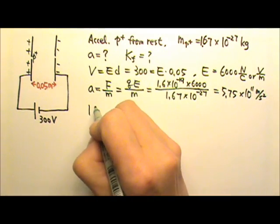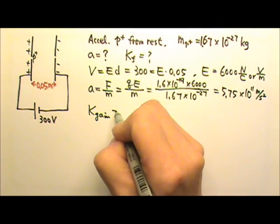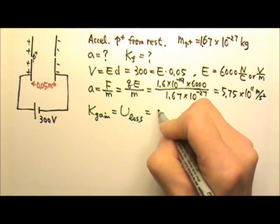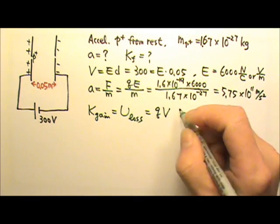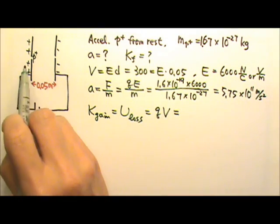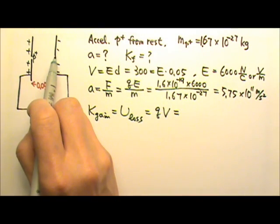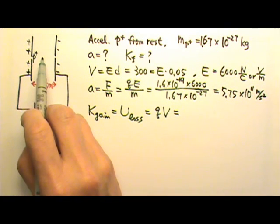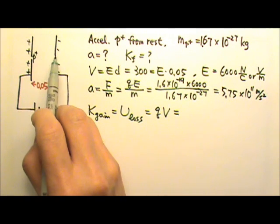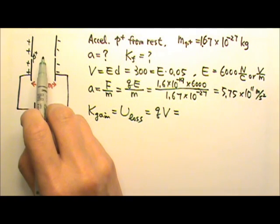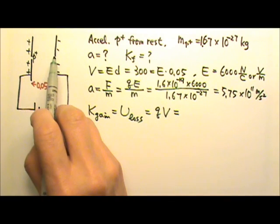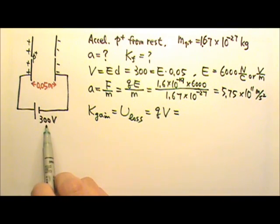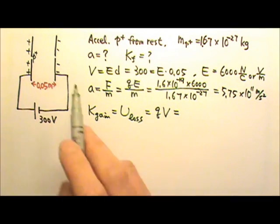If we are using a voltage to accelerate the charge, we can use the kinetic energy gain comes from the potential energy loss. And U equals to QV. If we are starting here, ending there, that means we are taking advantage of the entire 300 volts. If the charge starts from in the middle, right here, and then accelerates to the other end, that means it will only take advantage of 150, half of the voltage. But right now from here to here, that's 300 volts.